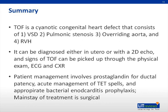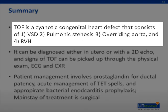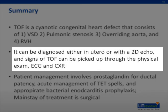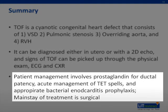In summary, TOF is the most common cyanotic congenital heart defect, and consists of a VSD, pulmonic stenosis, overriding aorta, and right ventricular hypertrophy. It can be diagnosed either in utero or with a 2D echocardiogram, and signs of TOF can be picked up through physical exam, ECG, and chest x-ray. Patient management involves prostaglandins for ductal patency, acute management of TET spells, and appropriate bacterial endocarditis prophylaxis. The mainstay of treatment for TOF, however, is surgical intervention.